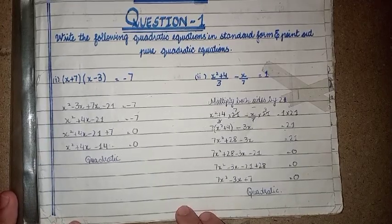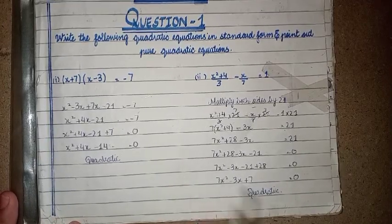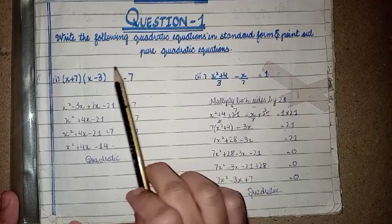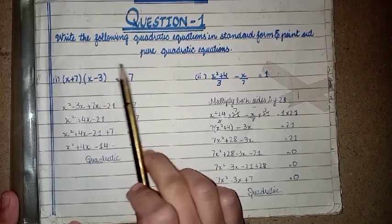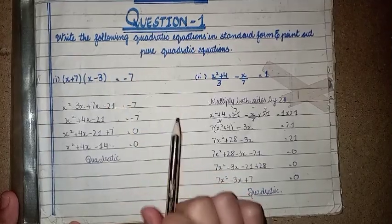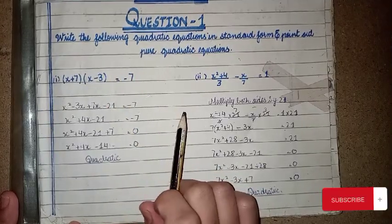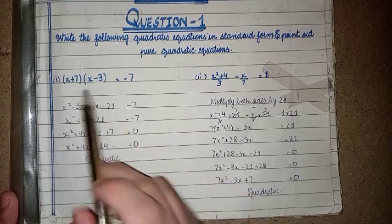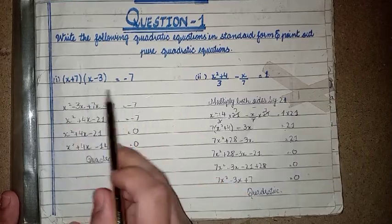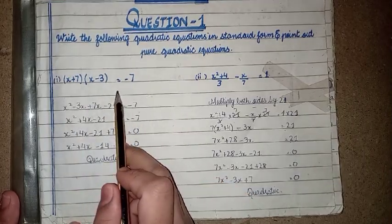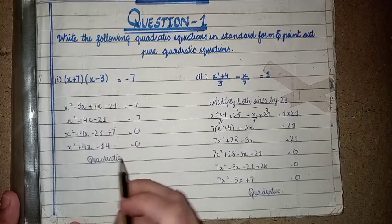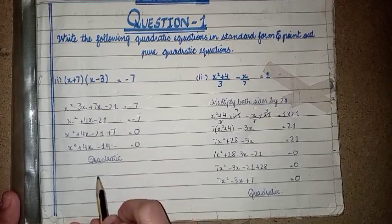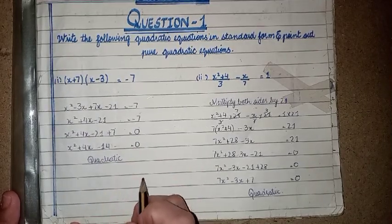Exercise 1.1, Class 10. Today we will discuss question number 1, which is: write the following quadratic equations in standard form and point out the pure quadratic equations. We have a question given and we have to write it in standard form and tell whether it is quadratic or pure quadratic.